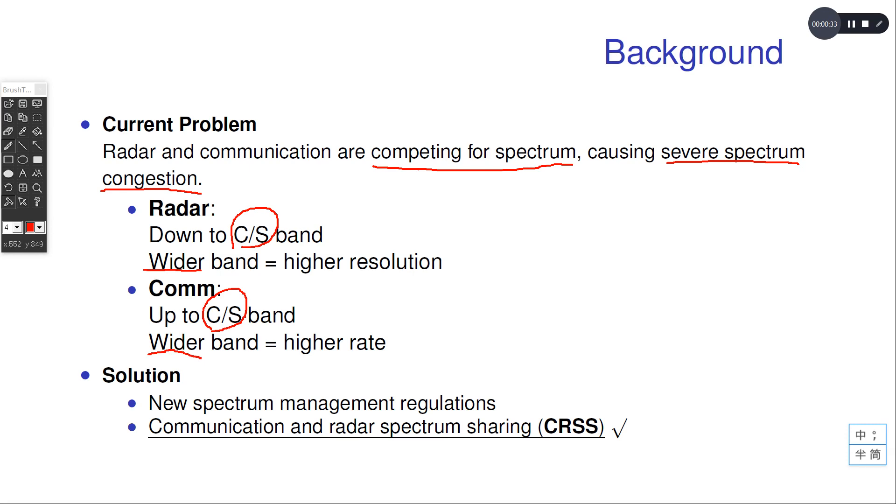There are two possible solutions at present. The first is to come up with new spectrum management regulations. However, this is a short-term solution because the spectrum is limited and will run out when more and more radar and communication systems using wider band signals appear.